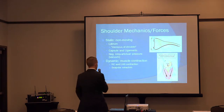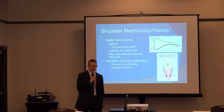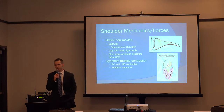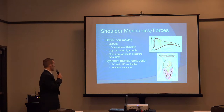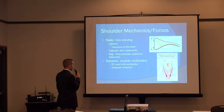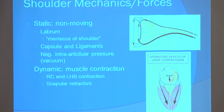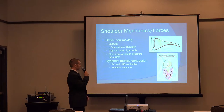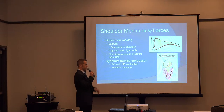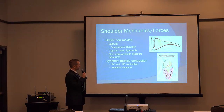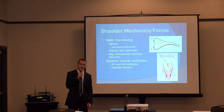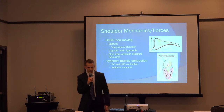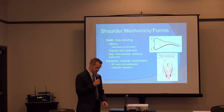There are two major forces on the shoulder — the static and the dynamic restraints that protect us from instability. The static are the non-mobile restraints such as the labrum, the capsule, and the ligaments. The labrum really deepens the glenohumeral joint and adds to the restraint of the shoulder by providing a vacuum effect, or a negative intra-articular pressure effect — almost a suction cup effect on the humeral head. The other forces that act are the muscle contraction of the shoulder, to include the rotator cuff muscles, the scapular stabilizers, and the long head of the biceps.